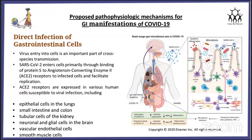Thanks, Ambika. Now we will discuss the proposed pathophysiologic mechanisms for GI manifestations of COVID-19. We will discuss direct infection of GI cells, gastrointestinal damage caused by lung infection, and gastrointestinal symptoms caused by drug side effects. First, direct infection of gastrointestinal cells. The cross-species transmission occurs only when the virus enters into cells. All coronaviruses encode a surface glycoprotein — a spike protein — which binds to host cell receptors and mediates virus entry. SARS-CoV-2 enters cells primarily through the binding of spike protein S to ACE2 receptors, facilitating replication.